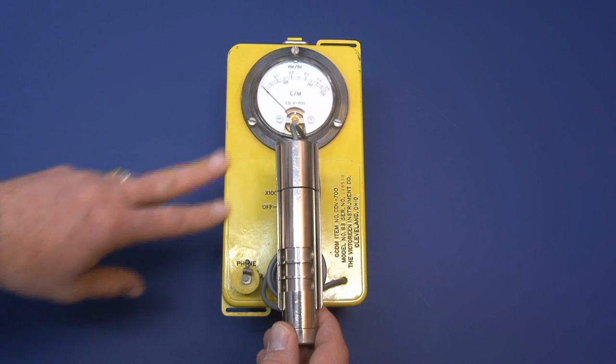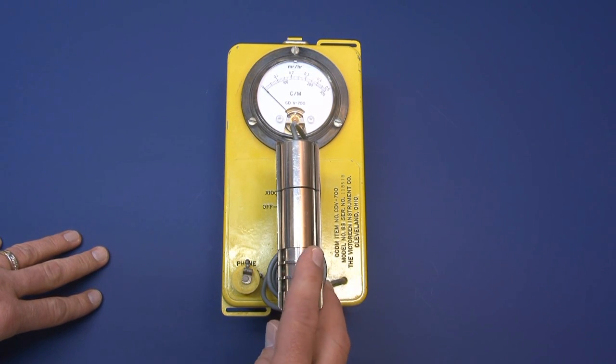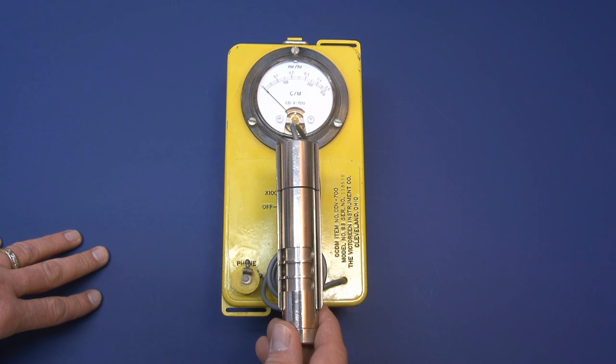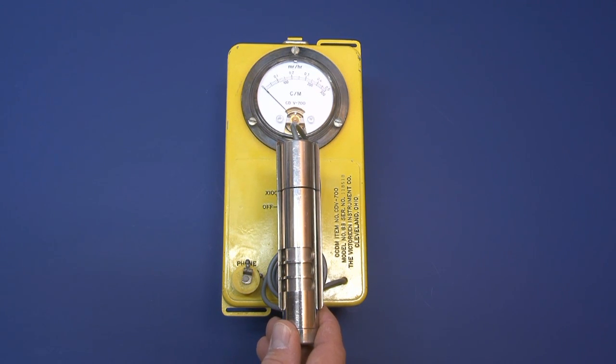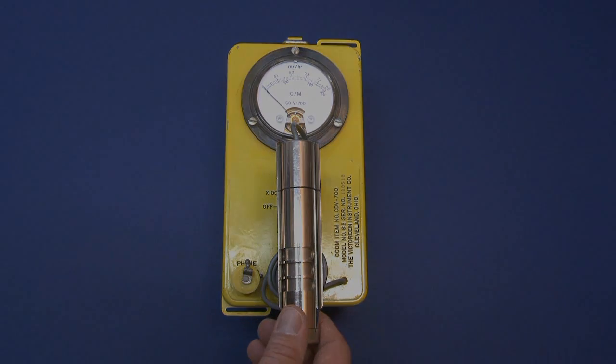It's important that you don't store the instrument for a long period of time, usually greater than 30 days, with the batteries in place. If you store it with the batteries in place, you can have battery seal failure, and that will ruin the inside of your instrument. So make sure you take those batteries out if you're going to store the instrument.